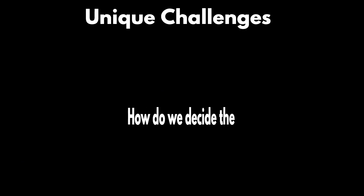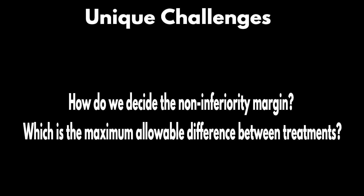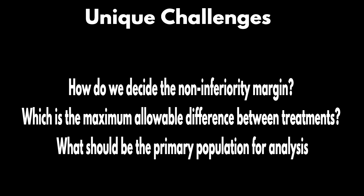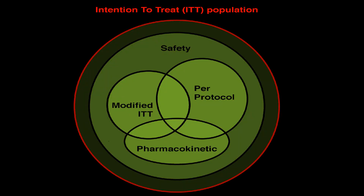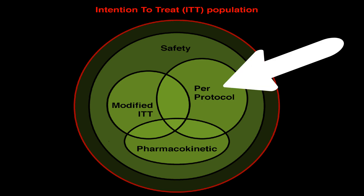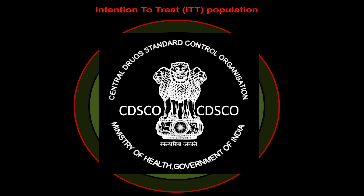But these trials are not as straightforward as they sound. There are unique challenges that come with non-inferiority trials. For instance, how do we decide the non-inferiority margin, which is the maximum allowable difference between treatments? What should be the primary population for analysis? And how do we ensure that the comparator treatment provides a fair fight? In an ideal world, the primary population for analysis should be the per-protocol population, which includes people who have taken their assigned treatment and adhered to it. But both the intention-to-treat and per-protocol populations are of interest to regulators.